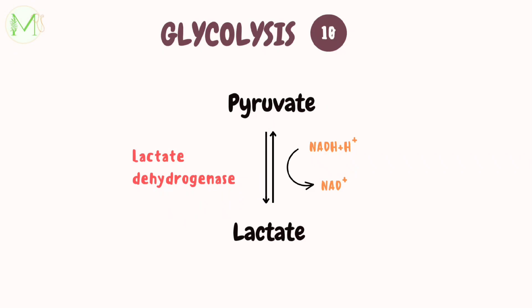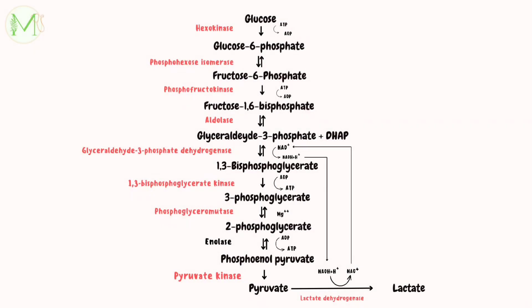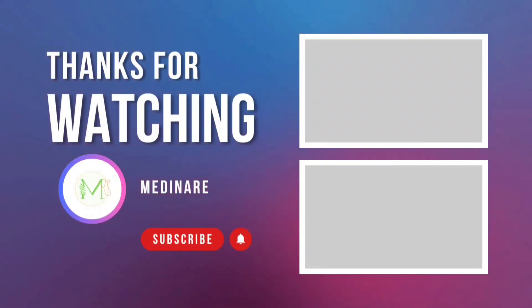And in step 10, only under anaerobic conditions, pyruvate is reduced to lactate by an enzyme called lactate dehydrogenase. Here is the summary of the steps of the glycolytic pathway. I hope you found it helpful. Do like this video and subscribe to my channel. Thank you for watching.